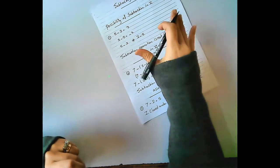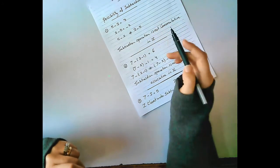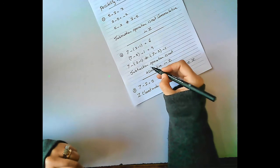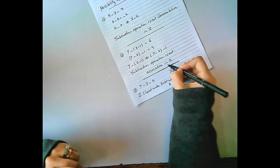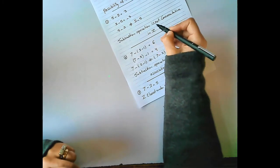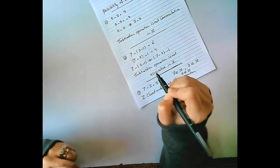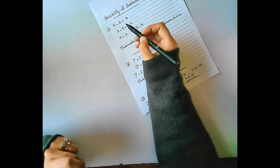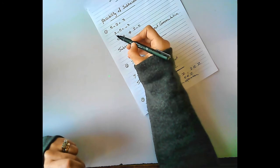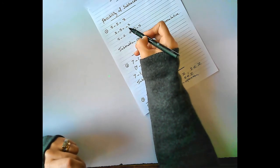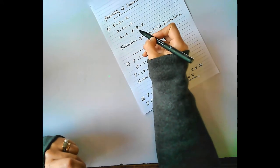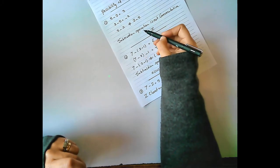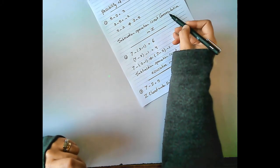Subtracting integers. Subtraction operation is not commutative in Z, and subtraction operation is not associative in Z. Why? 5 minus 2 equals 3, but 2 minus 5 equals negative 3. So 5 minus 2 does not equal 2 minus 5. Therefore subtraction operation is not commutative in Z.